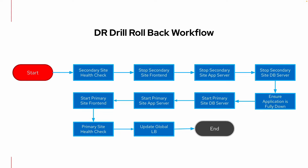The next phase is to roll back whatever has been done. We check that everything is still running properly in the secondary site, stop the front-end, the app server, and the database server, check the application is down, then start up the database server, app server, and front-end on the primary site, perform a health check, update the global load balancer to point back to the primary site, and end the workflow. All this would take quite a bit of time if done manually, but with the Ansible Automation Platform it can be done in an easy and straightforward fashion.